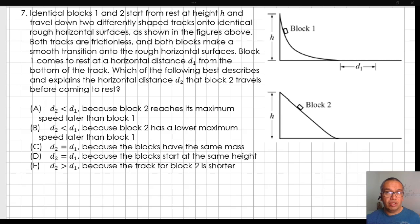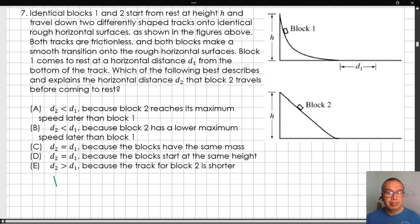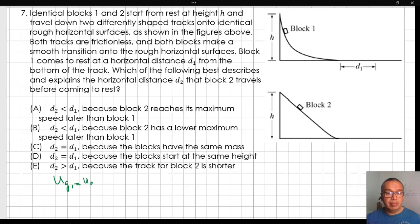Given that the two blocks start from the same height, the gravitational potential energy for the two blocks is the same at the beginning. Therefore, the kinetic energy at the bottom of each track has to be the same.